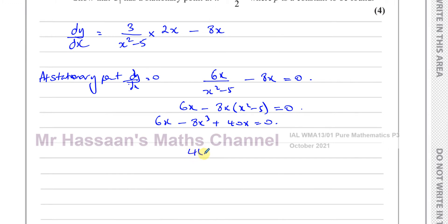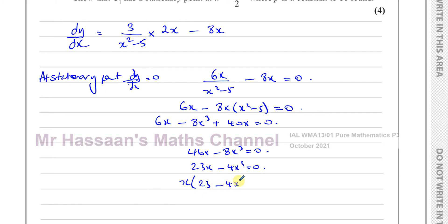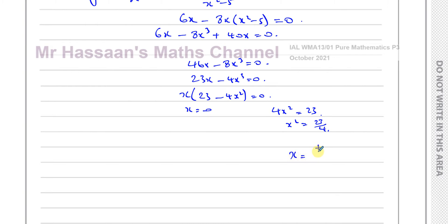So I have 46x minus 8x cubed equals 0. Dividing both sides by 2 gives 23x minus 4x cubed equals 0. Taking out x as a common factor: x(23 minus 4x squared) equals 0. So x equals 0 or 4x squared equals 23, giving x squared equals 23 over 4, so x equals plus or minus the square root of 23 over 4.